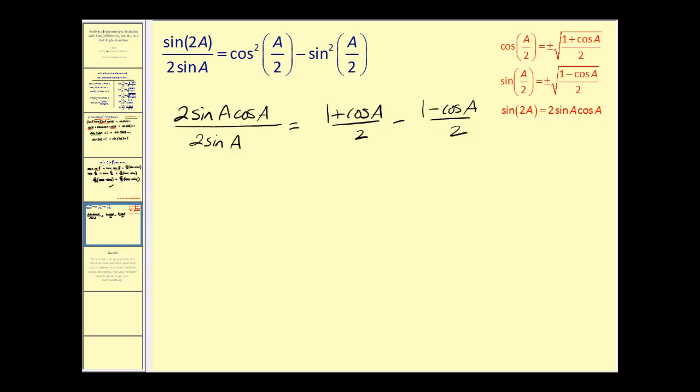Next on the left side we have a common factor of two as well as sine a. So on the left we're left with cosine a. Now on the right notice we have a common denominator. So let's go ahead and add these fractions.